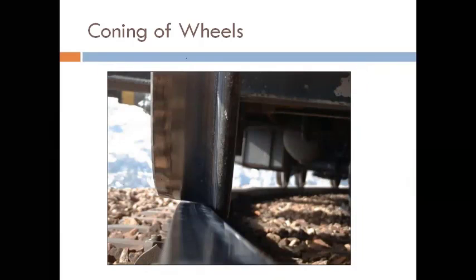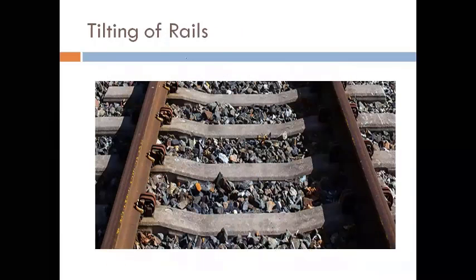Figures are provided to show what coning of wheels looks like; you can refer to any book for the theory. Next is tilting of rails. Since wheels are coned at a slope of 1 in 20, the rails are also tilted at a ratio of 1 in 20. When the slope is given to the wheels it is called coning of wheels; when the same slope is given to the rails, it is called tilting of rails.